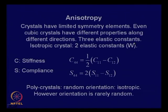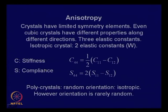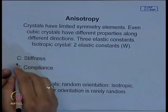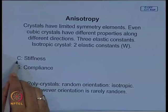For an isotropic material, the two elastic constants are typically Young's modulus and Poisson's ratio, from which the shear modulus can be found. We introduced the concepts of stiffness C and compliance S, which are actually tensors. C defines the relationship between stress and strain: sigma_i = C_ij * epsilon_j, where i and j vary from 1 to 6, and repeated suffixes mean summation.